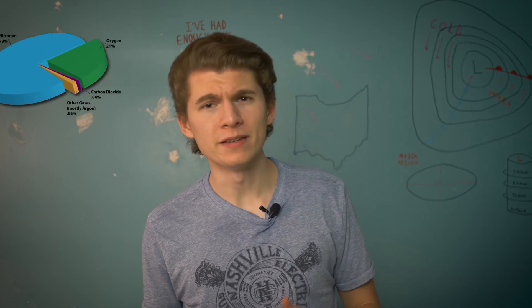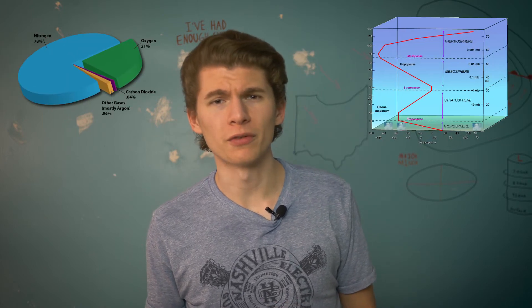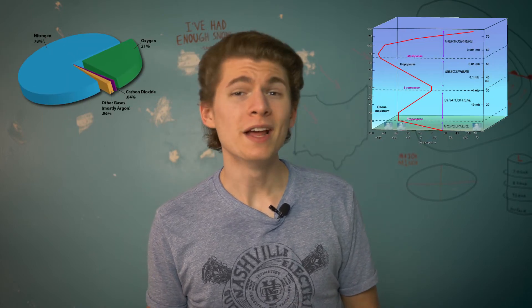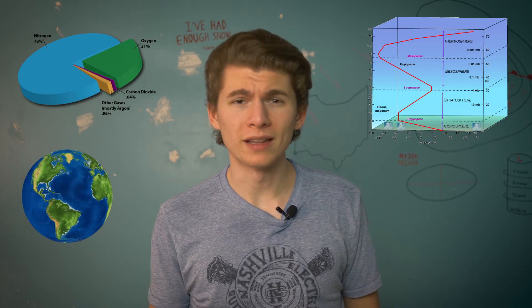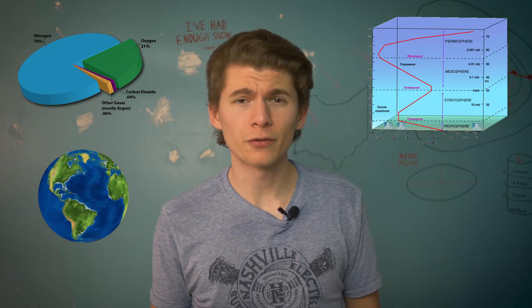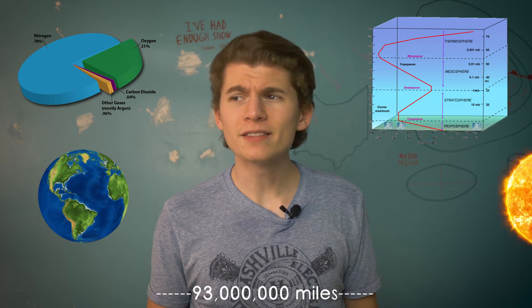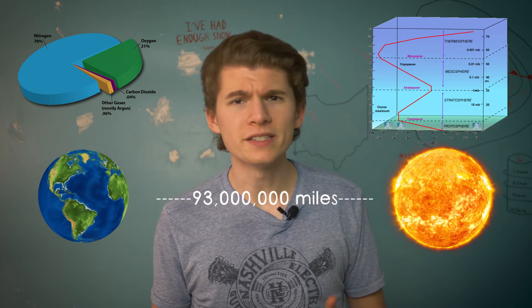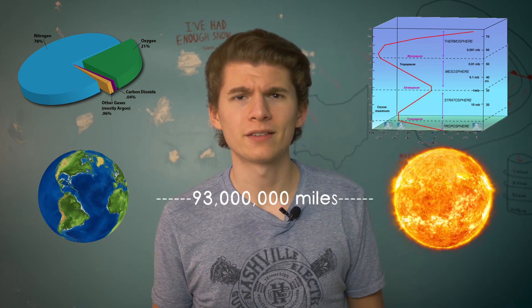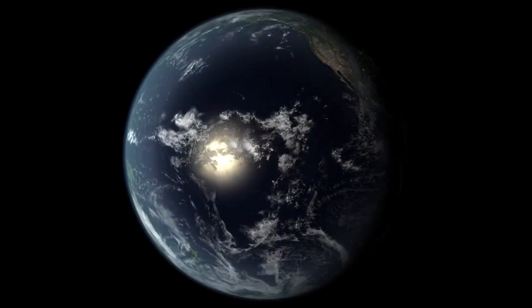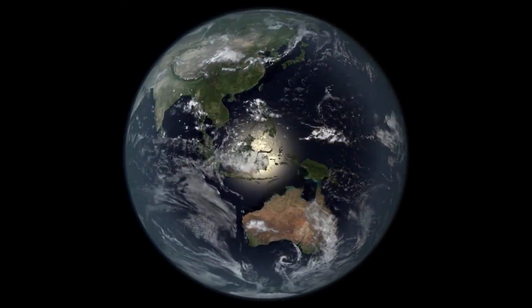The chemical makeup and temperature profile of our atmosphere, the amount of water and land we have at the surface, the distance from the sun, the tilt of our axis, the speed of the Earth's rotation — all these factors just lining up to create an amazing world of weather.